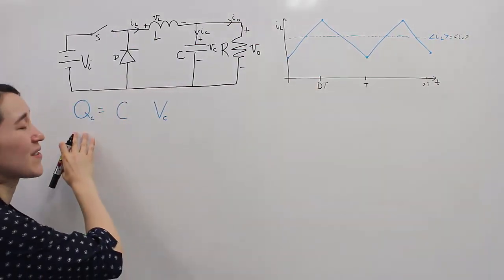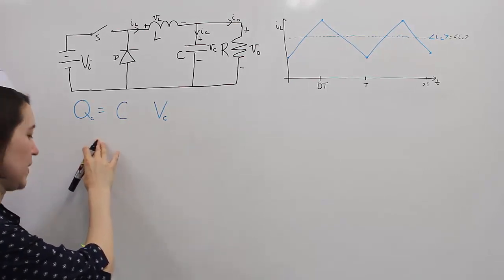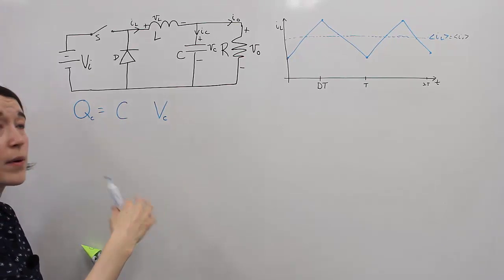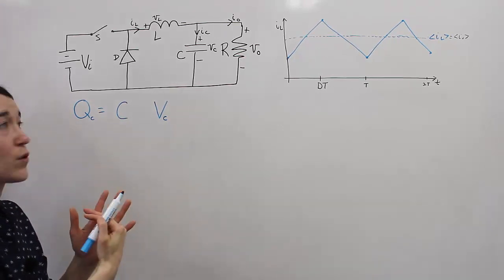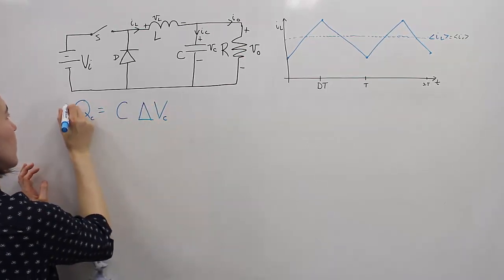To understand this equation, we're going to start from this basic charge equation for a capacitor. And we know that Q equals CV, but here we want to look at changes in voltage at the output.